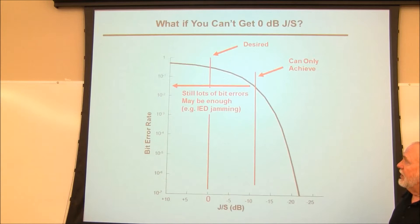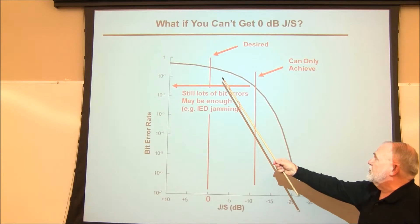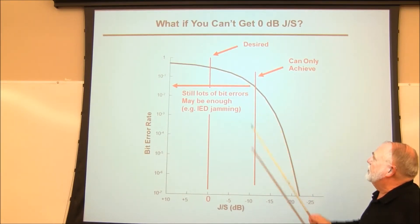This is an example of talking about jamming, and this happens to be in the digital communication realm. For example, if you're jamming a roadside bomb, an IED jamming. This shows the curve of bit error rate versus jamming-to-signal ratio. And the point of this is, if you have a jamming-to-signal ratio of zero, you get a digital signal. You get most of the bit errors that you want to get as part of a general discussion about jamming digital signals.